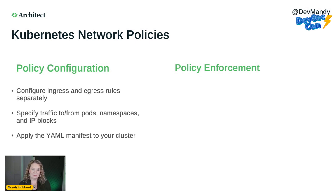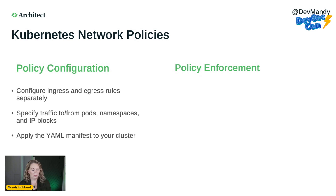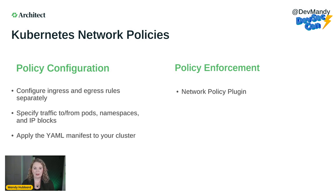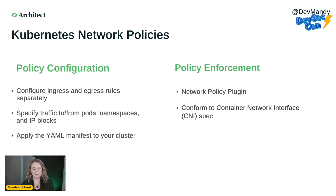Once you've created the YAML file, you apply it to your Kubernetes cluster using the Kubernetes API. But here's the thing — if you apply it to your cluster, it's not going to do anything at all until you enforce it using a network policy plugin. A network policy plugin is responsible for actually enforcing the rules you applied via your manifest file. Typically, network policy plugins conform to the container network interface, or CNI, spec.